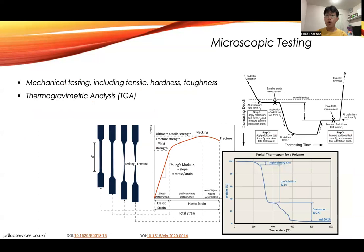The next one is mechanical testing. Mechanical testing includes tensile, hardness, toughness testing, and also other tests like TGA and so on. This is all about what I'm going to cover in the upcoming lessons for each particular technique.